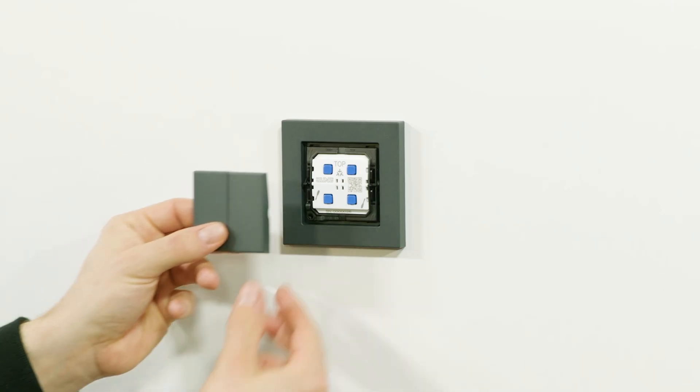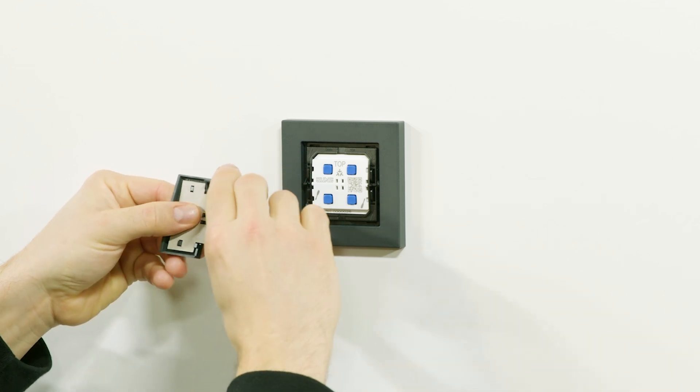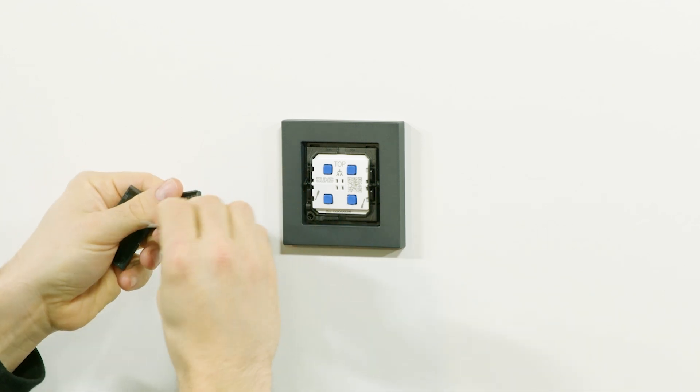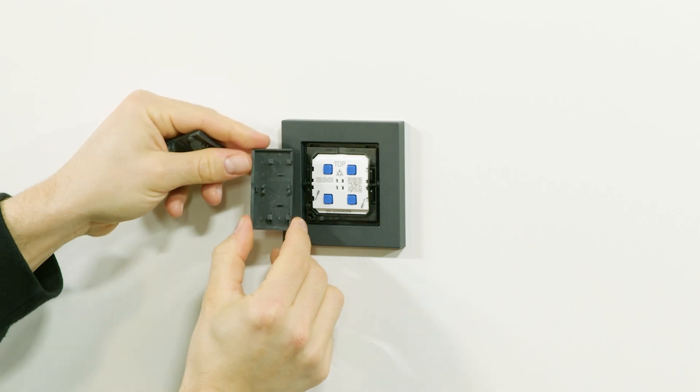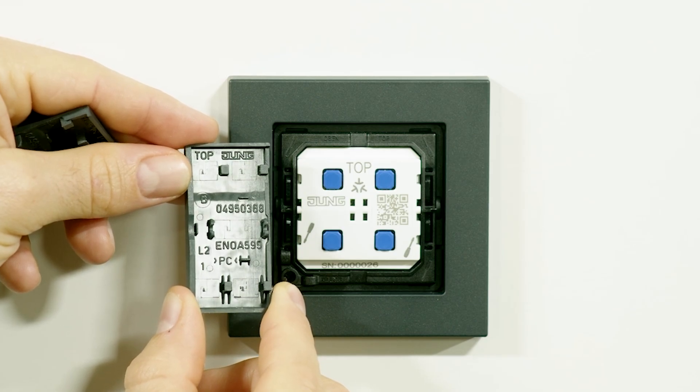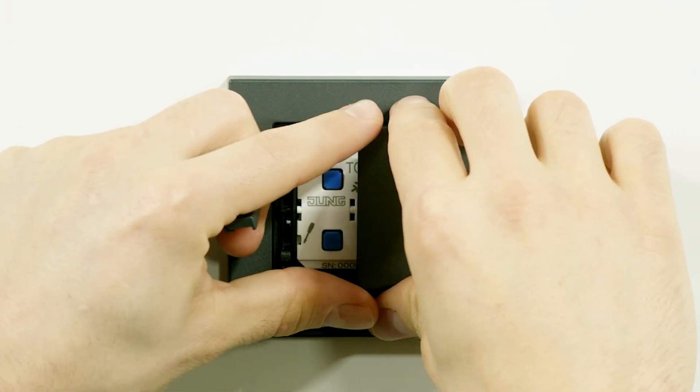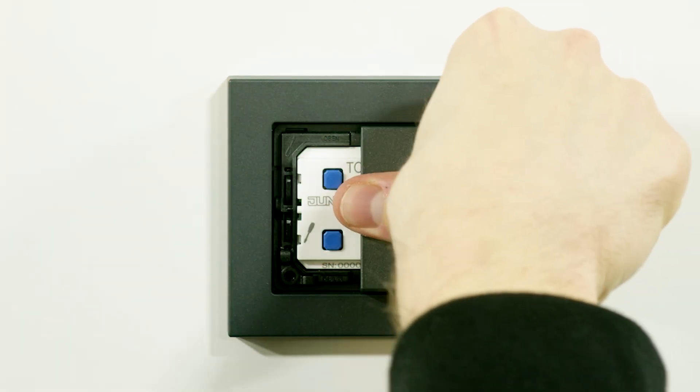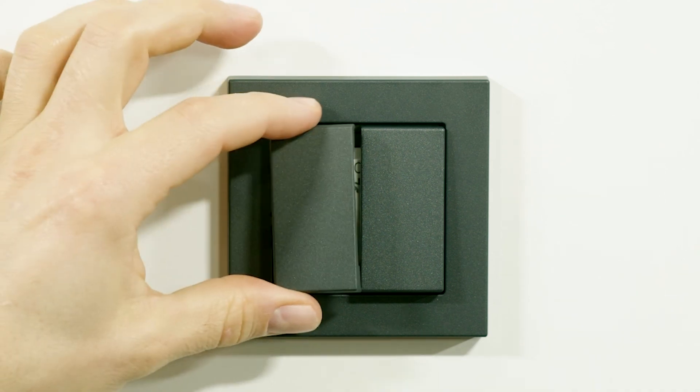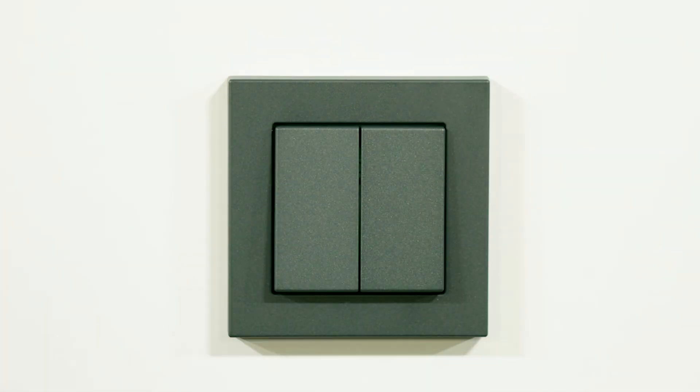Once you have successfully completed commissioning, the rockers of the push button can be attached. First remove the transport lock and snap the two rockers onto the module with the top marking facing upwards. The META push button is now ready for its intended use.